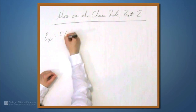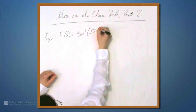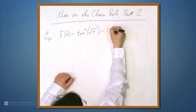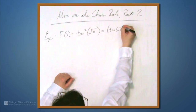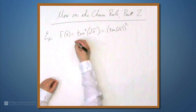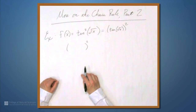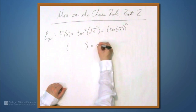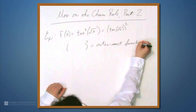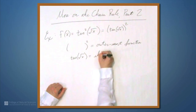Let's start with the example of f equals tangent squared of the square root of x. Whenever we have something like tangent squared, I always find it helpful to rewrite this as tangent of square root of x, in parentheses, squared. This makes it a little easier to see what's going on. We want to split this into an outermost function and everything else, and the square is the outermost function — that's why I wrote it this way. Something squared is the outermost function, and our tangent of square root of x is the rest.